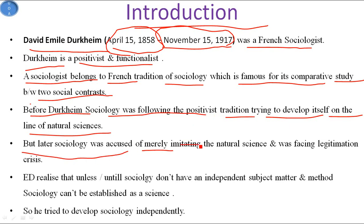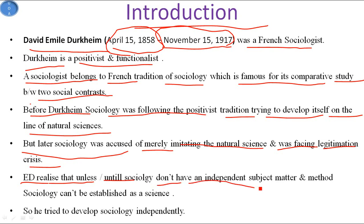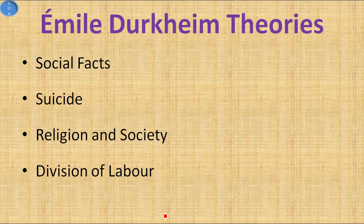Later, sociology was accused of merely imitating the natural sciences and was facing a legitimacy crisis. Emile Durkheim realized that unless sociology had an independent subject matter and method, it could not be established as a science. So he tried to develop sociology independently.